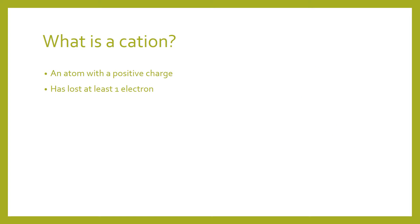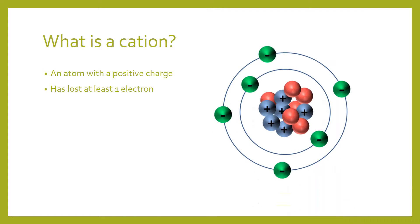A cation — however you pronounce it — is simply an atom with a positive charge, meaning it has lost at least one electron. With our carbon atom, if we lose one electron we have five negatives and six positives. You can just cross them off, and you're left with one positive charge.